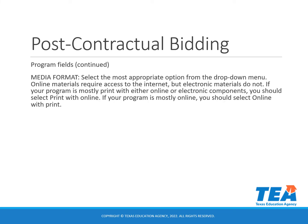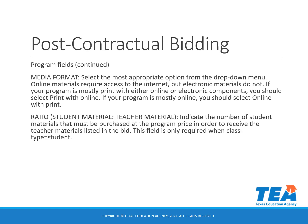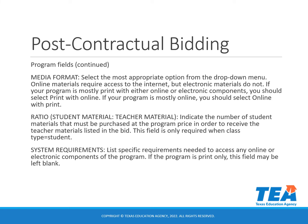In the media format field, you will select the most appropriate option from the drop-down menu. Online materials require access to the internet, but electronic materials do not. If your program is mostly print with either online or electronic components, you should select print with online. If your program is mostly online, you should select online with print. The ratio field indicates the number of student materials that must be purchased at the program price to receive the teacher materials listed in the bid — this field is only required when the class type is student. The system requirements field is where you will list specific requirements needed to access any online or electronic components; if the program is print only, this field may be left blank.